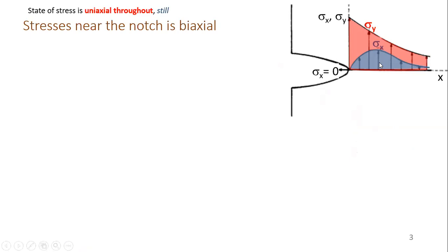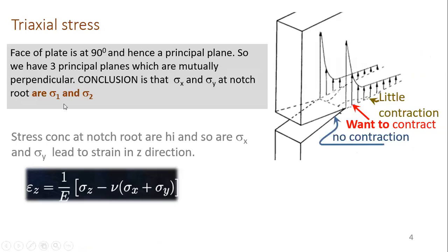Near the notch, sigma x and sigma y are both high. Due to both of them, something strange is created in the z-direction. To understand this mathematically: using the expression for strain involving Poisson's ratio, which is constant. Sigma x is positive and tensile, and is large near the notch and zero far away. Sigma y is very large near the notch and nominal far away. Sigma z on the surface is assumed to be zero — we have made this assumption. Both sigma x and sigma y are positive.